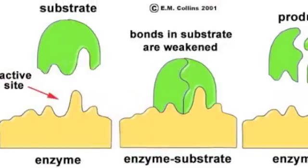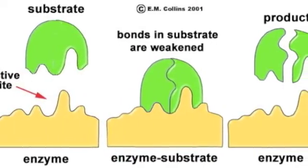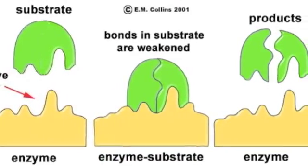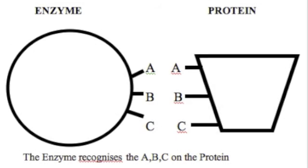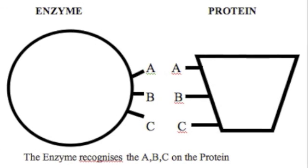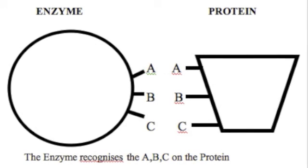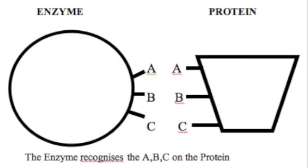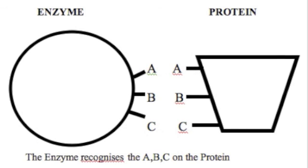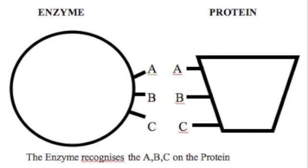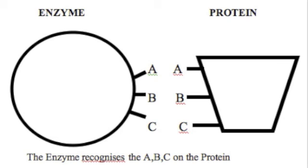So you ask, how does the loss of specificity indicate a loss of information? Well, if an enzyme can recognise A, B and C at its binding or working or catalytic site, then it will only work on or catalyse proteins with A, B and C on them in the right order.